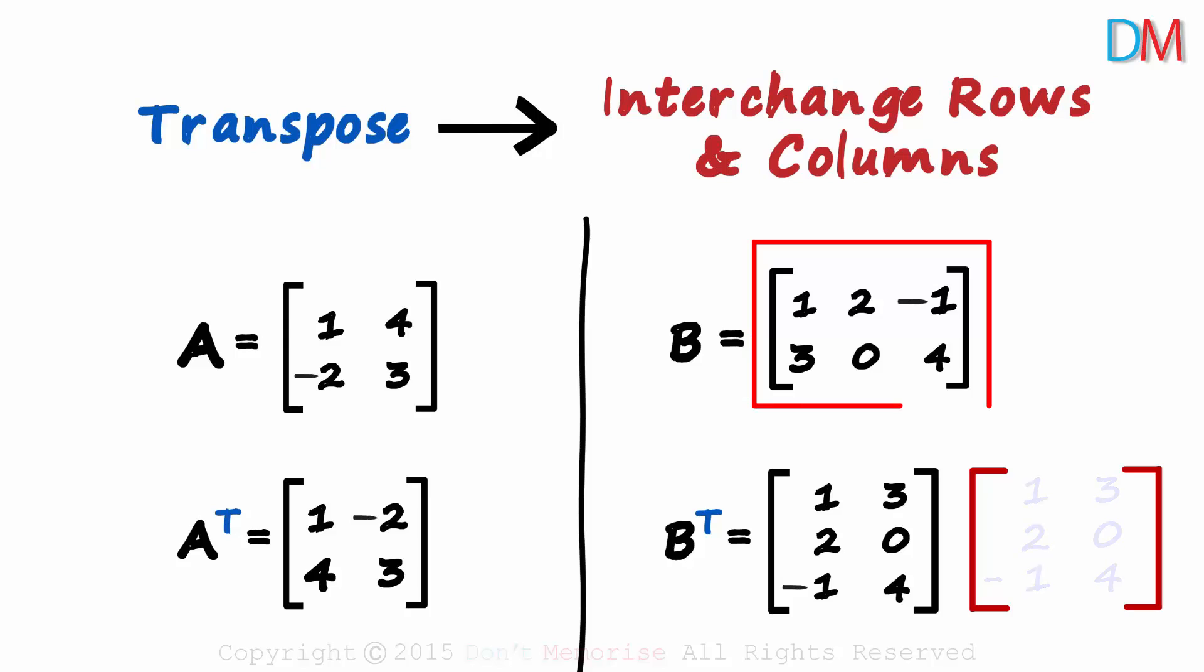What is the order of matrix B? It has 2 rows and 3 columns. Its order will be 2 by 3. And B transpose has 3 rows and 2 columns, 3 by 2. The order is also reversed. 2 by 3 becomes 3 by 2.